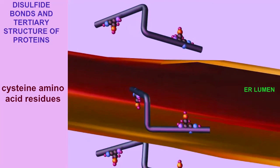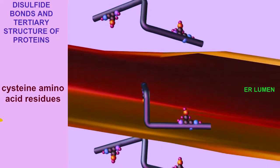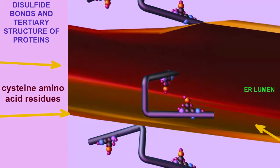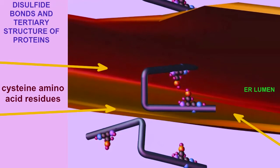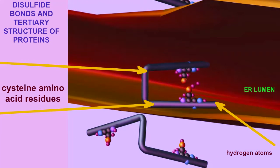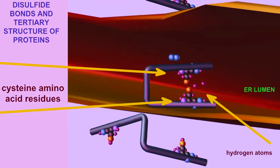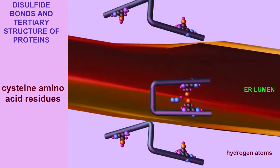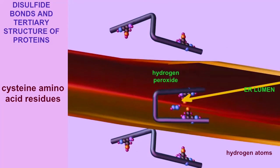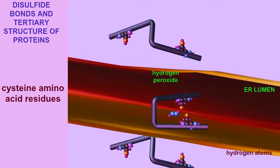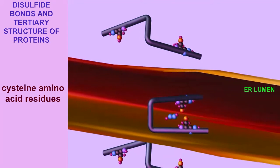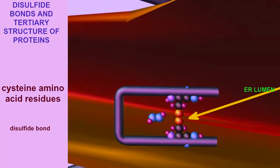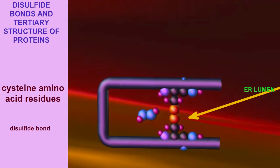One of the important steps in the achievement of the proper tertiary structure of a protein is the formation of disulfide bonds between two amino acids known as cysteine, which contains sulfur. When the SH groups of cysteine amino acids react with oxygen, hydrogen peroxide is produced, removing the hydrogen atoms — one from each cysteine amino acid — so that the two cysteines fuse, forming a disulfide bridge, which links two portions of a protein to each other.